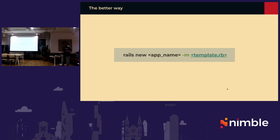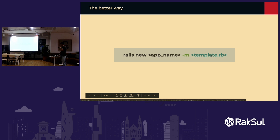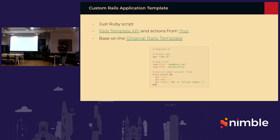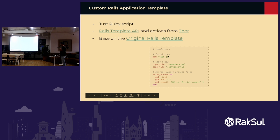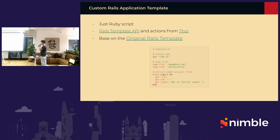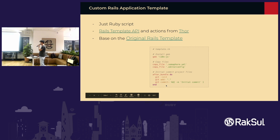This template file can be on a server or your local file system. This is where the magic happens. The `template.rb` is just a simple Ruby script, no more, no less. It's based on the original Rails template API, and also some methods provided from the Thor gem. For example, you can add a gem like `i18n.js`, copy some files like `.editorconfig`, and handle events like after the bundle finishes — doing `git init`, `git add`, and `git commit`.